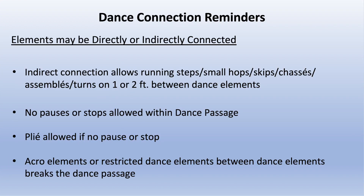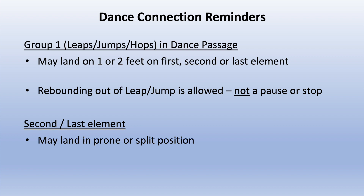Dance connection reminders: elements may be directly or indirectly connected. An indirect connection allows running steps, small hops, skips, chassées, assemblies, or turns on one or two feet between dance elements. No pauses or stops are allowed within the dance passage. A plié is allowed if there is no pause or stop, and acro elements or restricted dance elements between the dance elements would break the dance passage. Group 1 leaps, jumps, or hops in dance passages may land on one or two feet on the first, second, or last element. Rebounding out of a leap or jump is allowed as it is not a pause or stop. The second or last element may land in prone or split position.